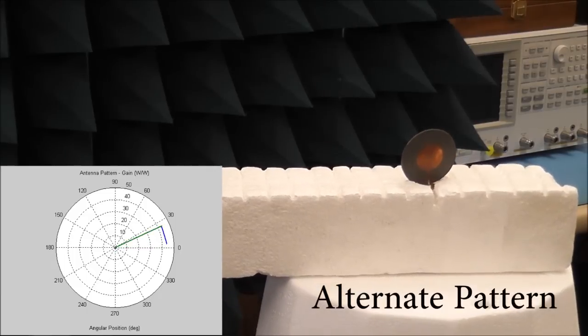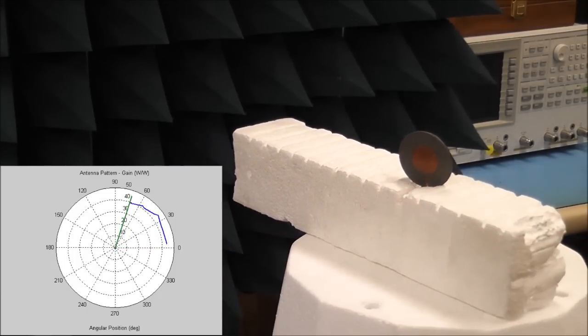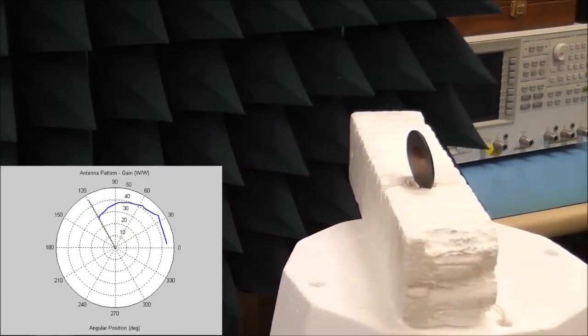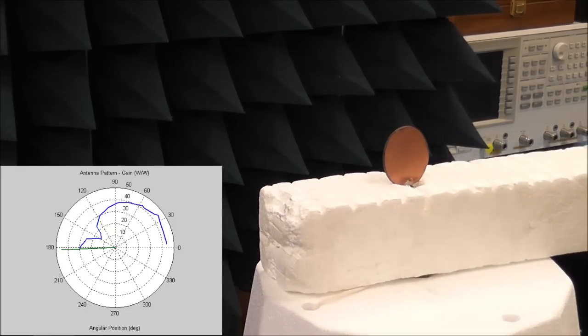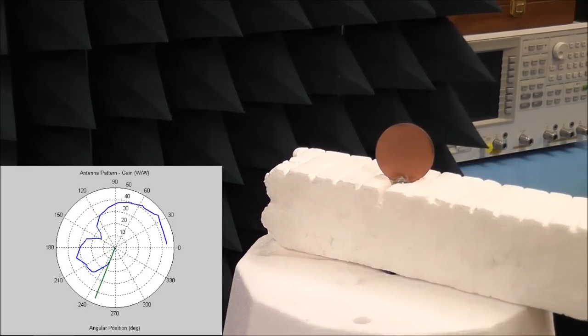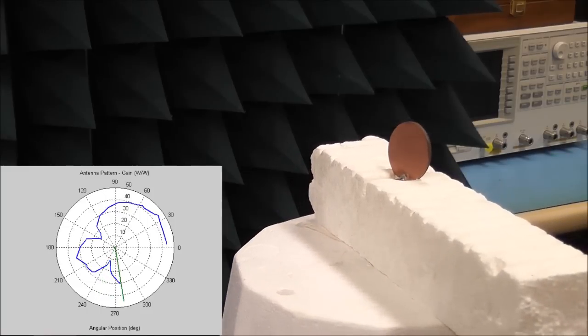Finally, a metamaterial type antenna is measured. This antenna was constructed by the Electromagnetics Research Group at Michigan State University and was presented at the 2010 IEEE International Symposium on Antennas and Propagation.